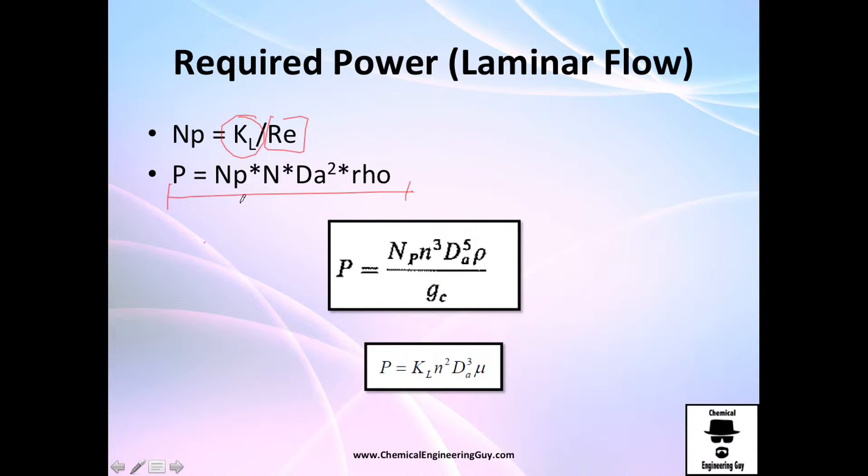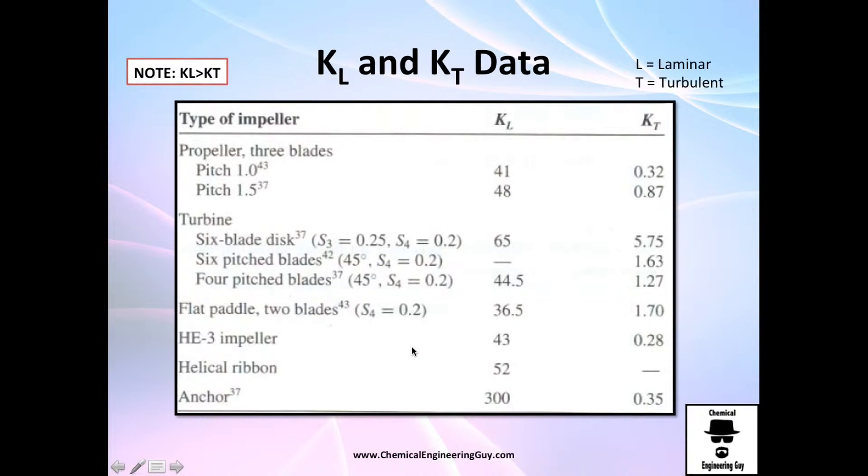This is how you calculate power. Recall that the power by definition has this formula, so the only thing you need to do is substitute NP right here. The power number is this number you can just plug in here. Normally you will know how fast you are operating, viscosity of the fluid, and the diameter. The only thing you need to check out is the geometry for laminar flow or KL.